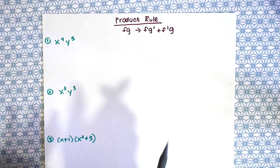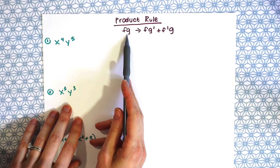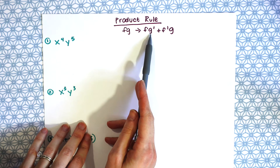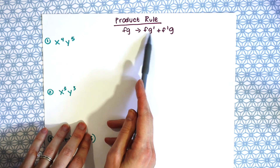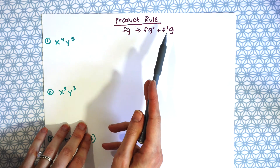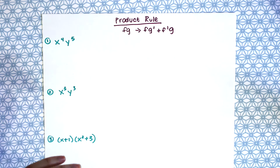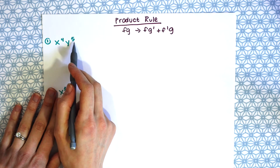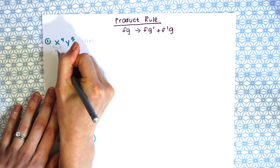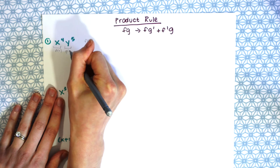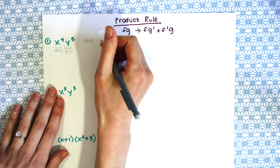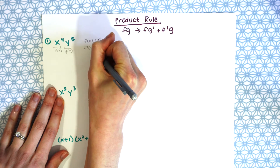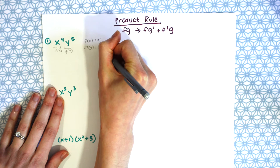Up next we have the product rule. That's when we have two functions being multiplied together. We find the derivative of one times the original of the other, then add it to the derivative of the other times the original of the first. For example one, we have x to the fourth times y to the fifth. Let f of x equal x to the fourth, so f prime equals 4x cubed.